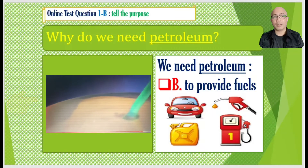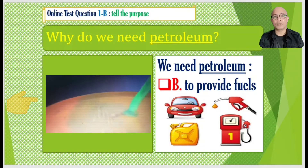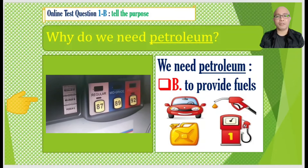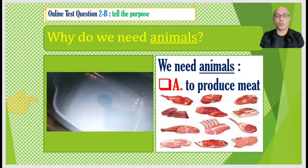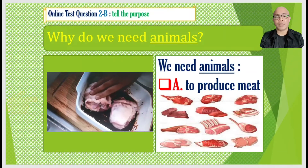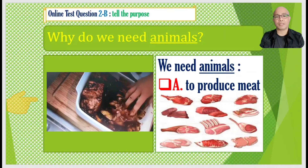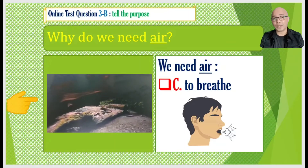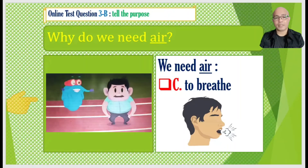Number one: Why do we need petroleum? We need petroleum — B to provide fuels. Answer number two: Why do we need animals? We need animals — A to produce meat. Answer number three: Why do we need air? We need air — C to breathe.